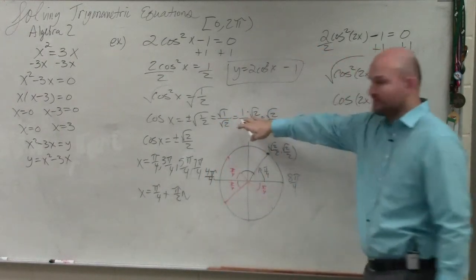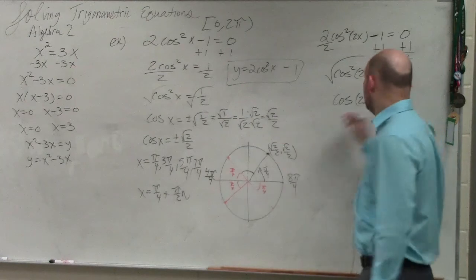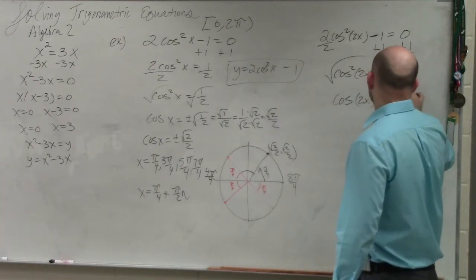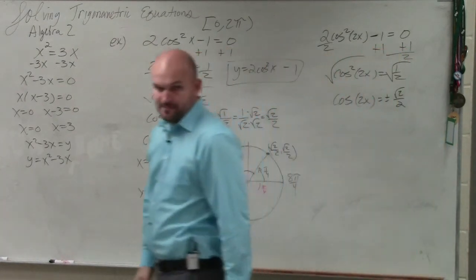Cosine of 2x, as I've already kind of shown over here where I showed my math, that's going to equal plus or minus the square root of 2 over 2. Does everybody follow me? OK.